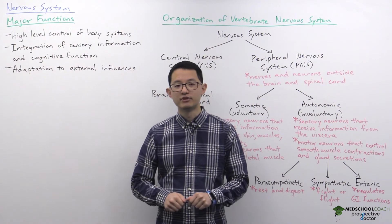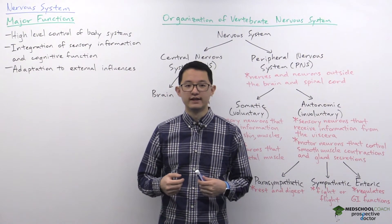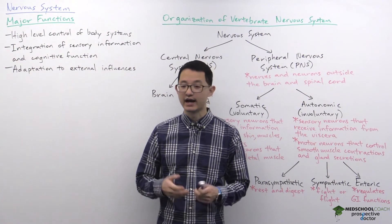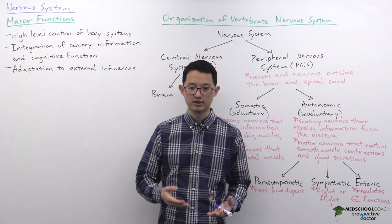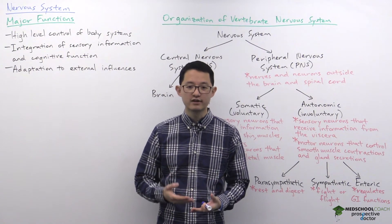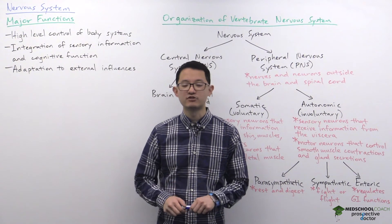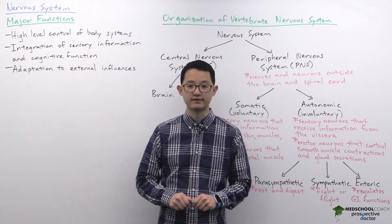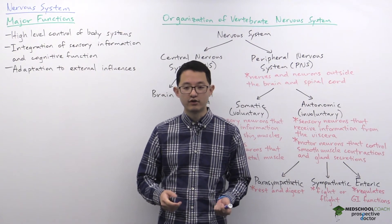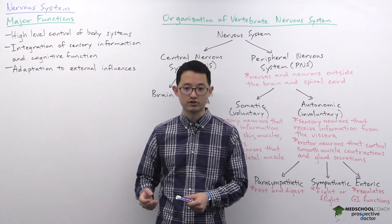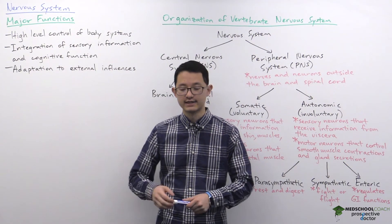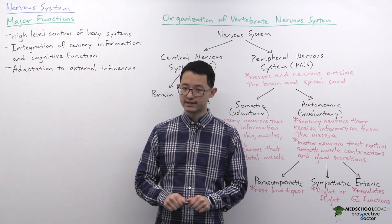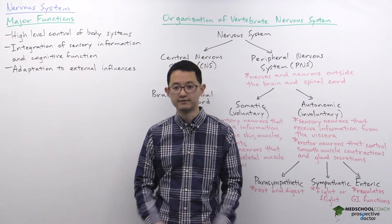Another example would be the control of reproduction by the nervous system. The hypothalamus is a brain structure that releases a lot of different hormones. Many of these hormones are involved in the regulation of the reproductive systems, but others are involved with controlling other physiological processes. In subsequent videos when we look at the endocrine system, we'll discuss the hypothalamus in more detail.